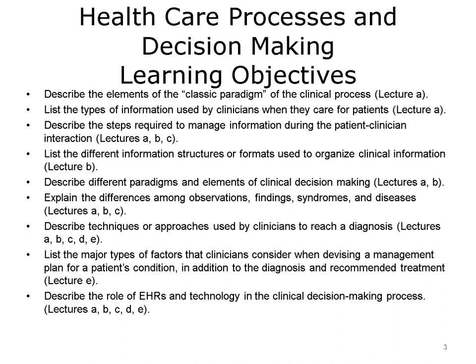The objectives for health care processes and decision making are to describe the elements of the classic paradigm of the clinical process, list the types of information used by clinicians when they care for patients, describe the steps required to manage information during the patient-clinician interaction, and list the different information structures or formats used to organize clinical information.